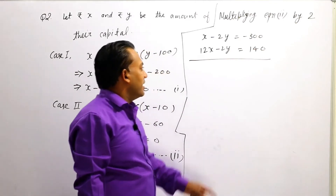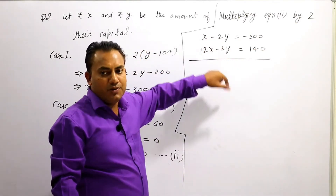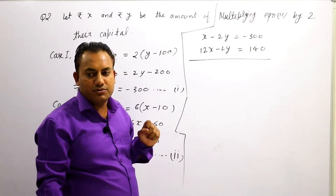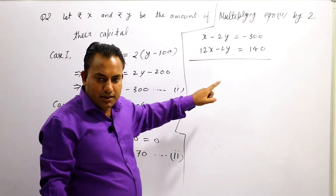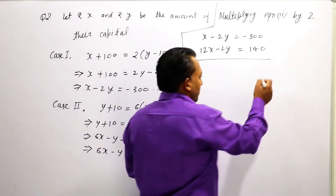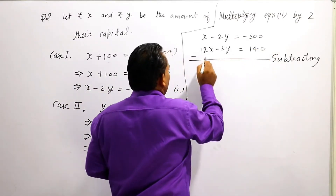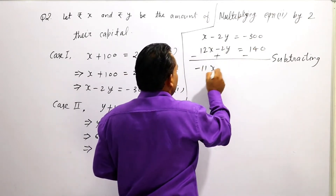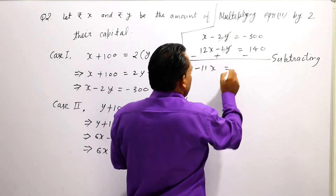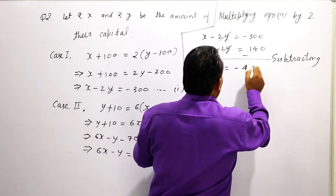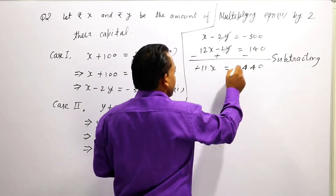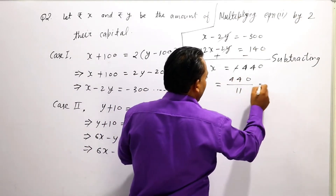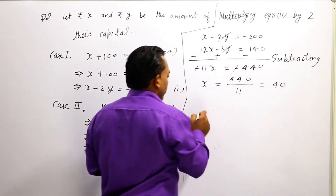To eliminate y, both terms have the same sign, so we subtract. Subtracting equation 1 from the multiplied equation 2: the y terms cancel. We get 11x = 440, so x = 440 / 11 = 40.